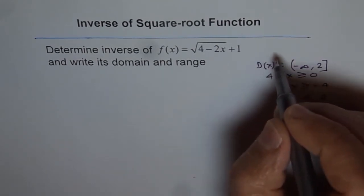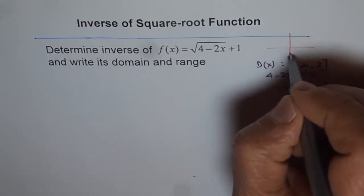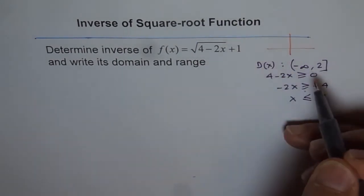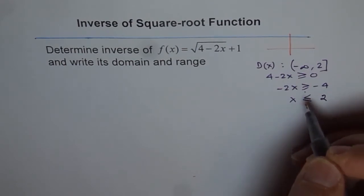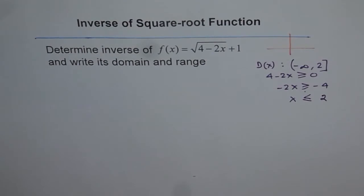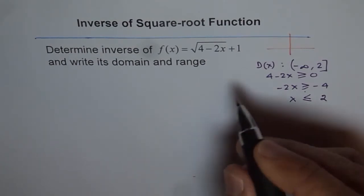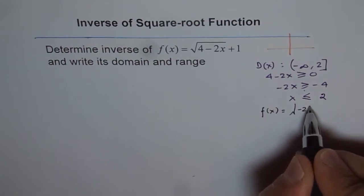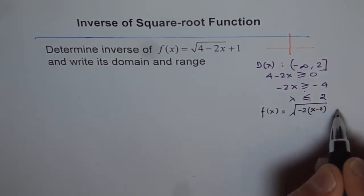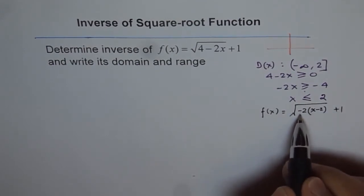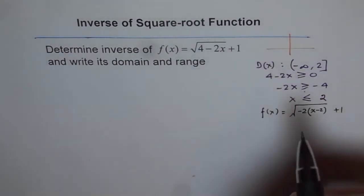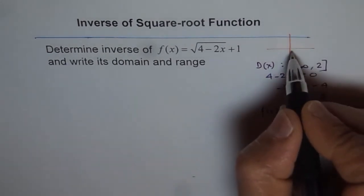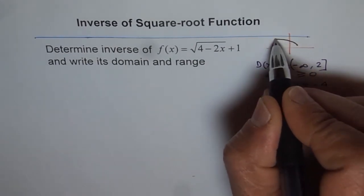What is the range of this function? It has to do something with 1. Let's try to sketch this function. If we rewrite it, we have f(x) equals the square root of minus 2 times (x minus 2), plus 1. This means there is a horizontal reflection, and the graph moves 2 units to the right and 1 unit up.